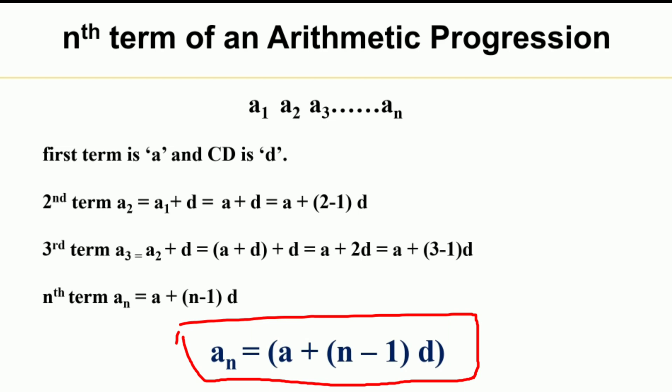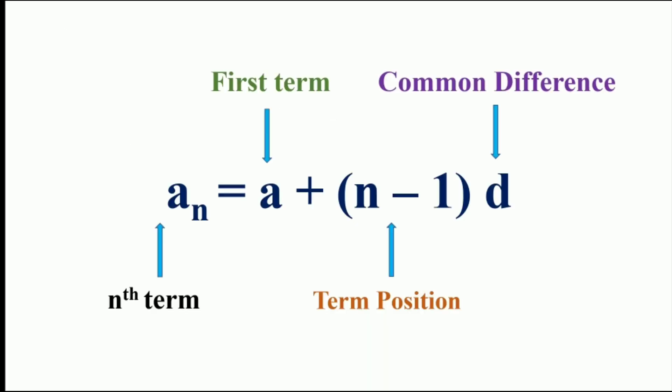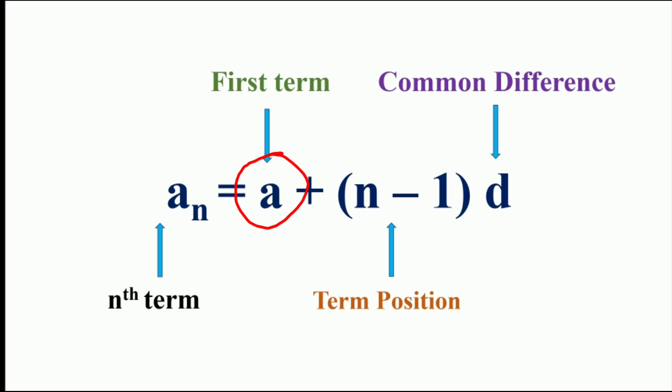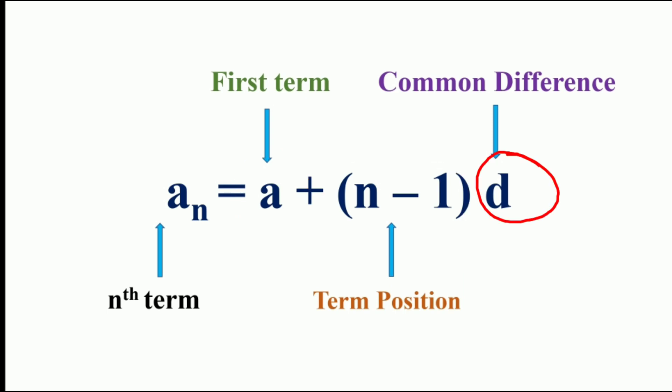The nth term of an arithmetic progression is equal to A plus (N minus 1) × D. We can find the nth term using the formula: AN = A + (N − 1) × D, where AN is the nth term, A is the first term, (N minus 1) is the term position, and D is the common difference. This is called the general term of an arithmetic progression.